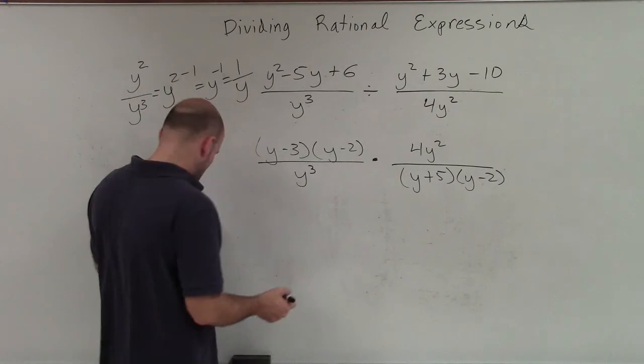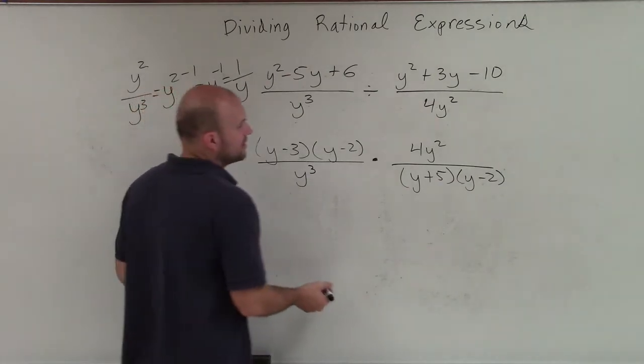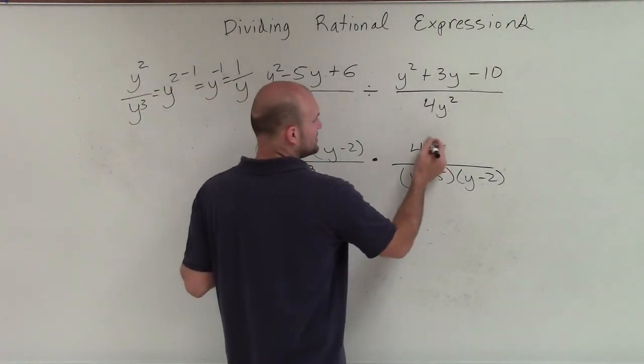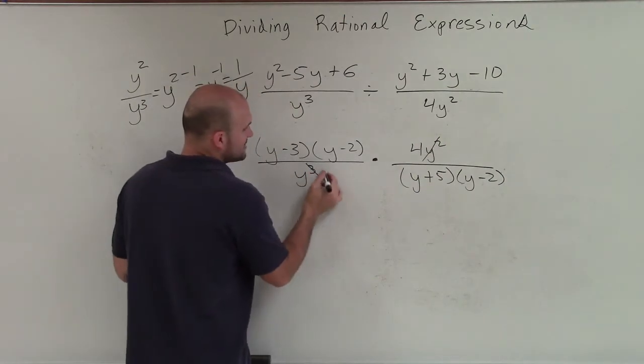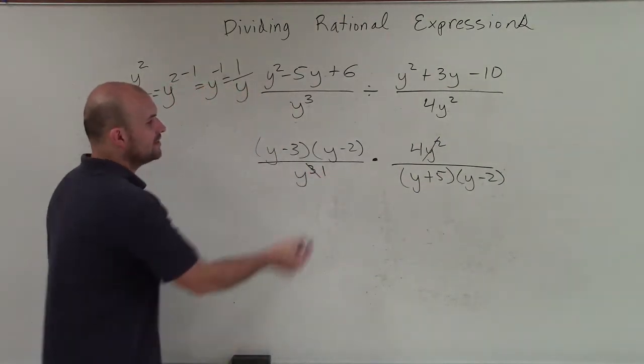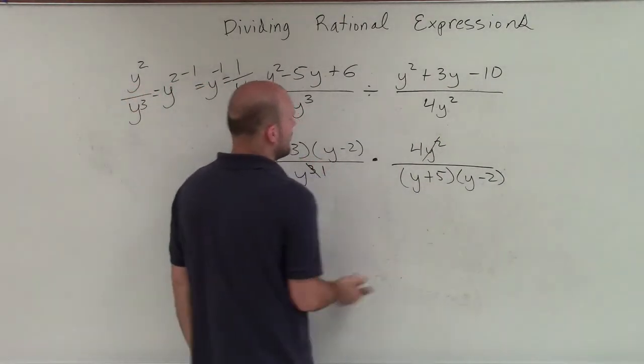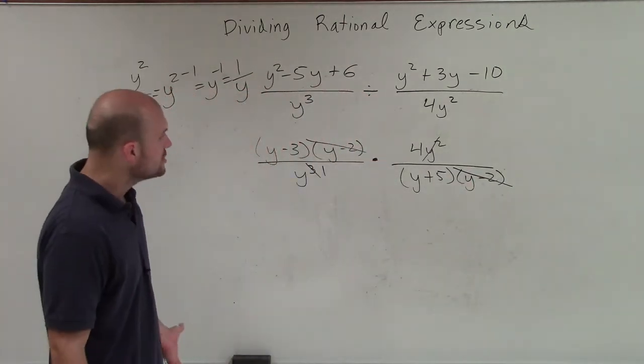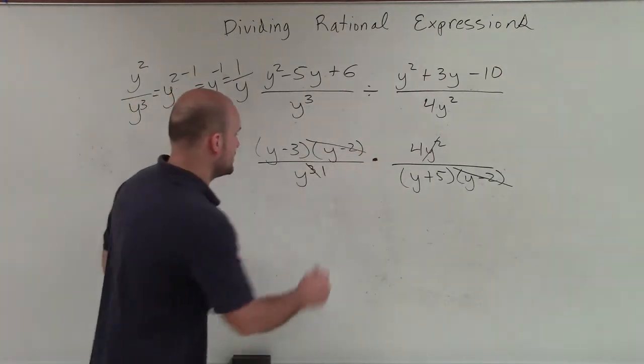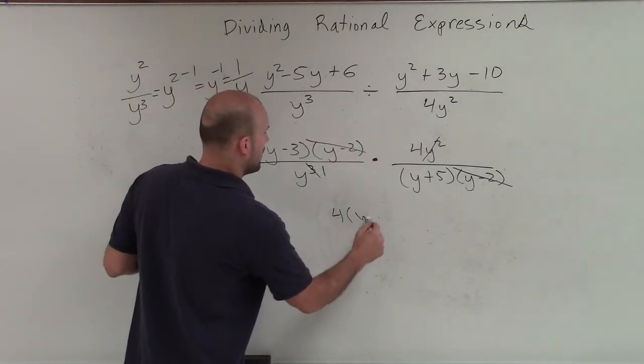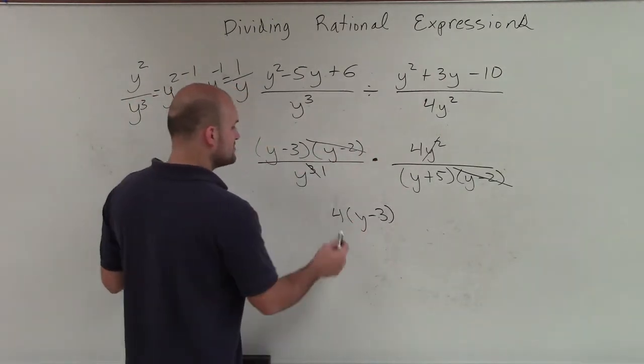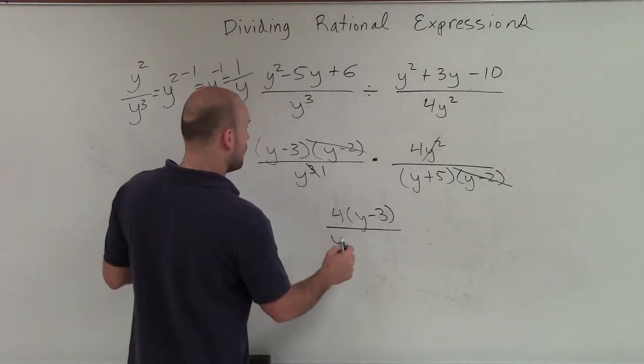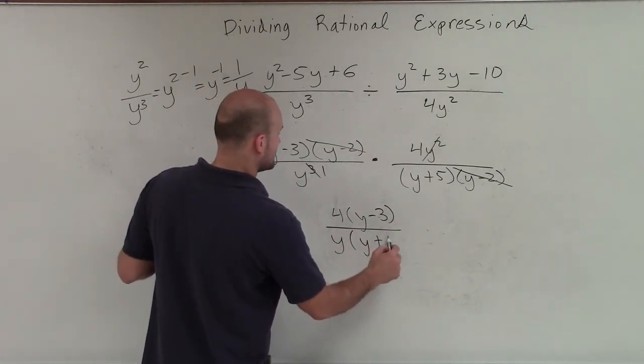So when looking at this, I'm going to kind of do, I don't have my other marker, but I just know that this is going to divide out, and this is going to go to a 1. Then I know this y minus 2 divided by y minus 2, that divides to 1 as well. So therefore, leaving me with the only terms in the numerator is going to be a 4, y minus 3. And the only terms in my denominator are going to be y times y plus 5.